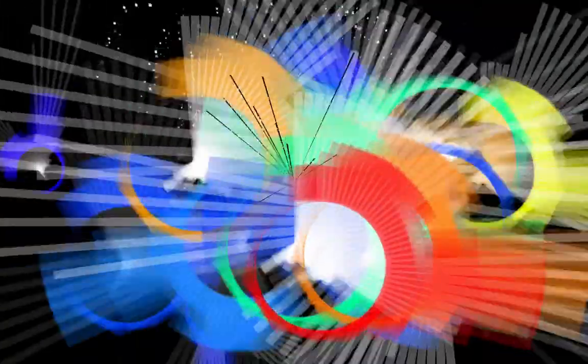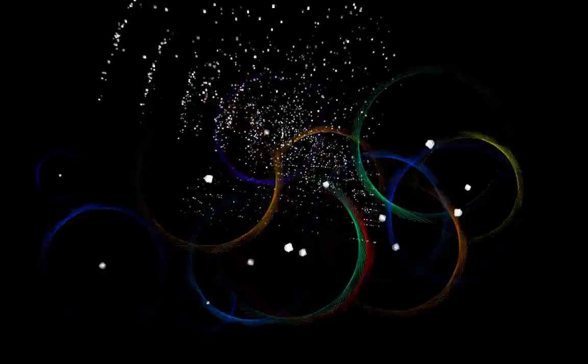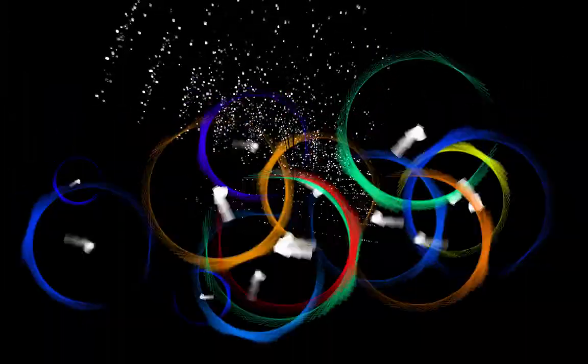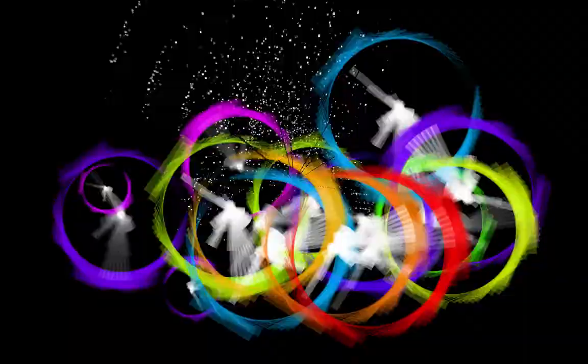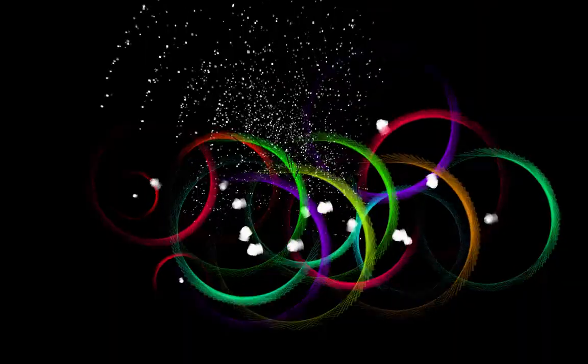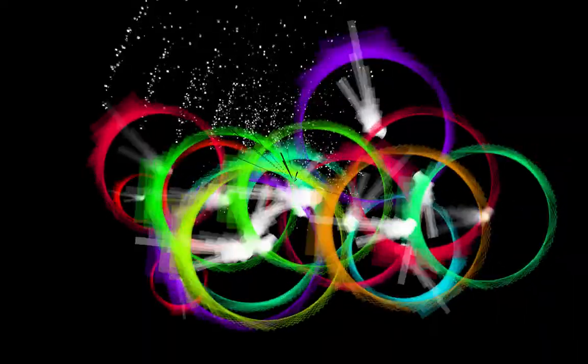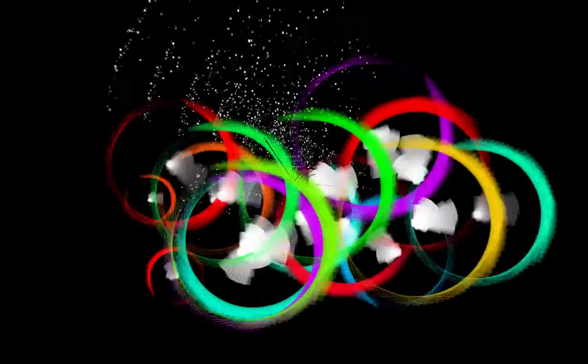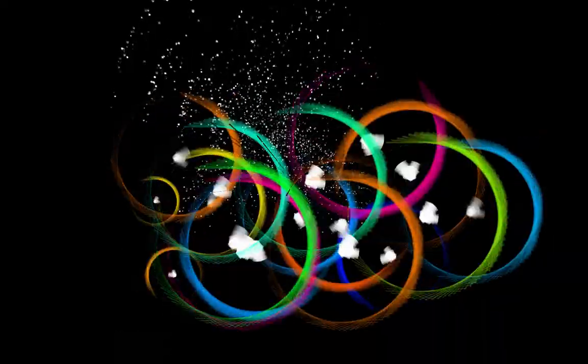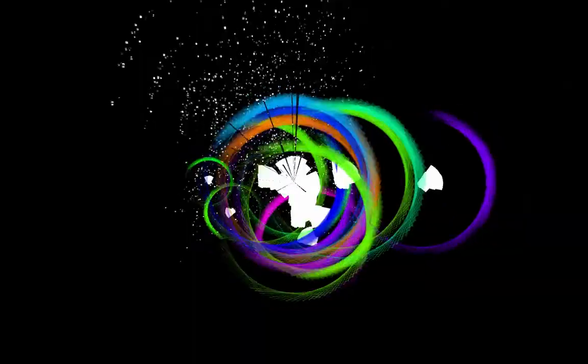It's calculating an average of a frequency range basically, getting those values and making them into lines around in a circular formation. Those circular formations just bounce around the screen, and if you get loud enough they kind of all come to one, which is a gravity effect.